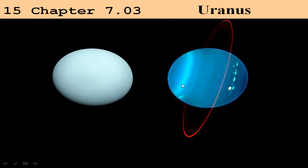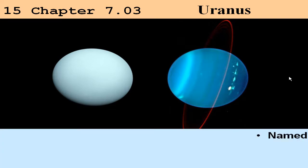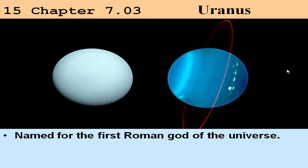Here are two nice pictures of Uranus. Uranus was named for the first Roman god of the universe, the father of Kronos, or Saturn. So here's the first father of the universe, with Saturn coming next, and then Jupiter — Zeus in the Greek mythology.